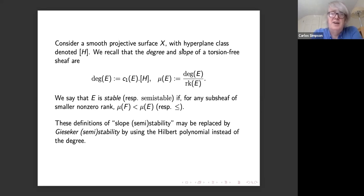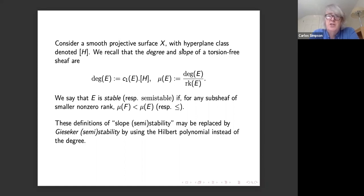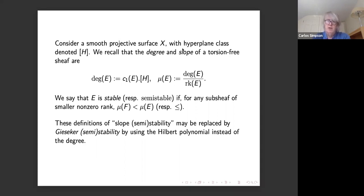Starting with basic definitions: suppose we have a smooth projective surface. We have the hyperplane class H. If we have a torsion-free sheaf, its degree is the first Chern class dotted with the hyperplane class, and the slope is the degree divided by the rank. We say it's stable if for any strictly non-trivial sub-sheaf the slope of the sub-sheaf is strictly smaller than the slope of E, or semi-stable if it's less than or equal.